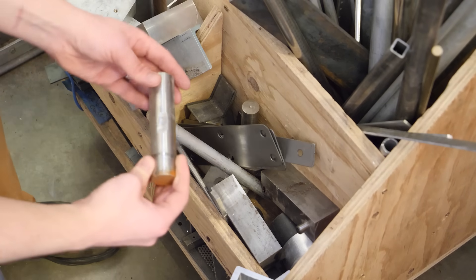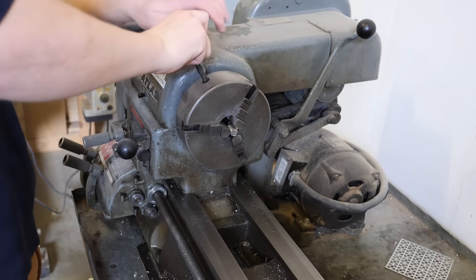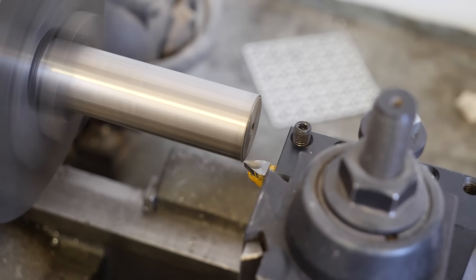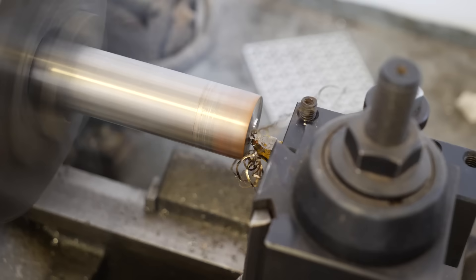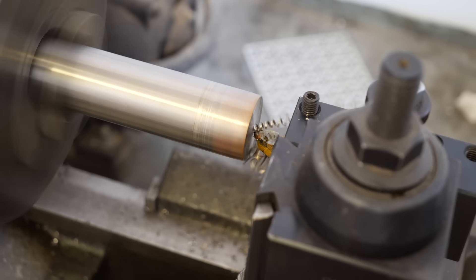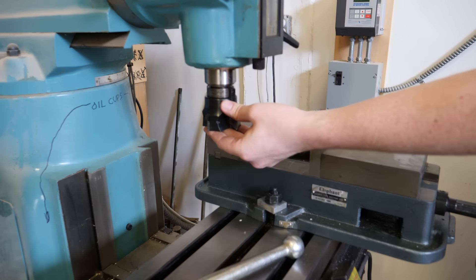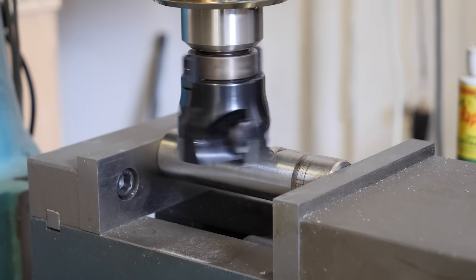While those were printing, I got started on an improved test fixture, starting with some round scrap material to make a smoother pushing surface for the press. This should keep the press from digging into the top plate and damaging it, giving us more consistent results. I cleaned up the ends in the lathe, and then I milled a flat to press against, which will keep it from rolling.